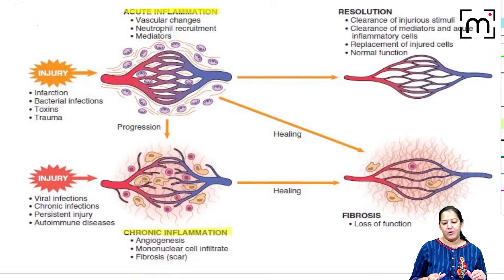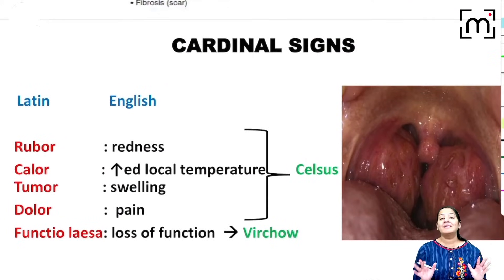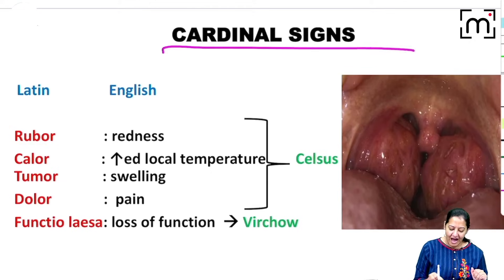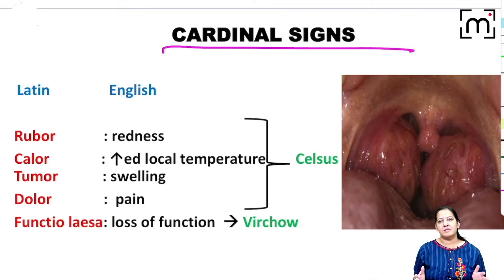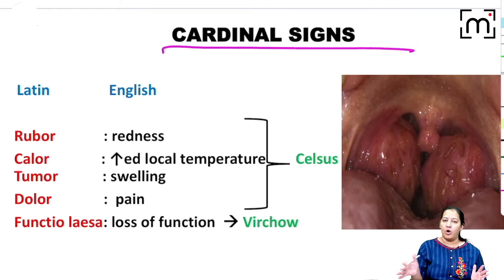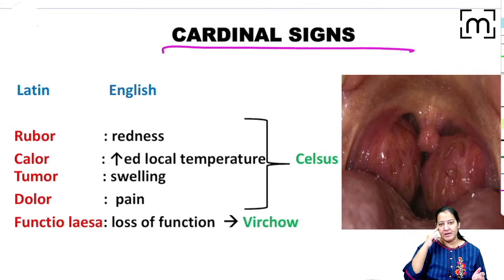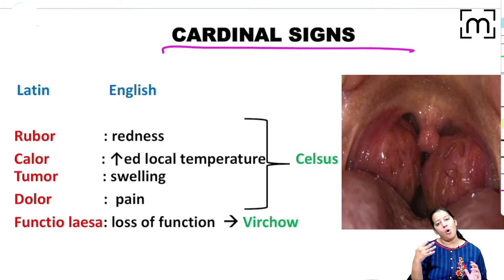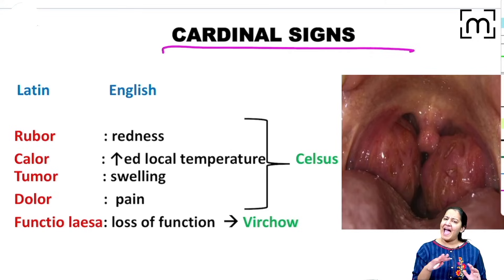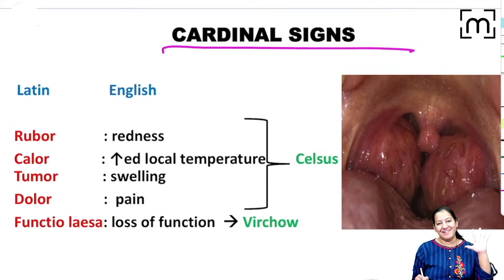In acute inflammation we have five cardinal signs. Cardinal signs are the signs present in all organs having acute inflammation. Technically, we can have acute inflammation from head to toe — meningitis in the meninges, ophthalmitis, retinitis, rhinitis, tonsillitis, bronchitis, appendicitis. Any organ with acute inflammation will show these five features, which are known as cardinal signs.